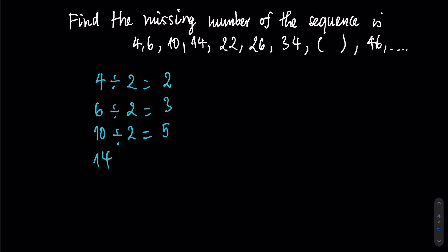So next term, similarly, we will have 14 divided by 2 is 7, and so on. We will have 26 divided by 2 gives us 13, 34 divided by 2 is 17.